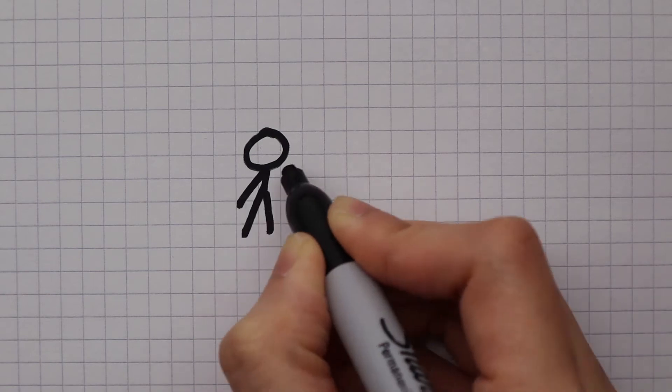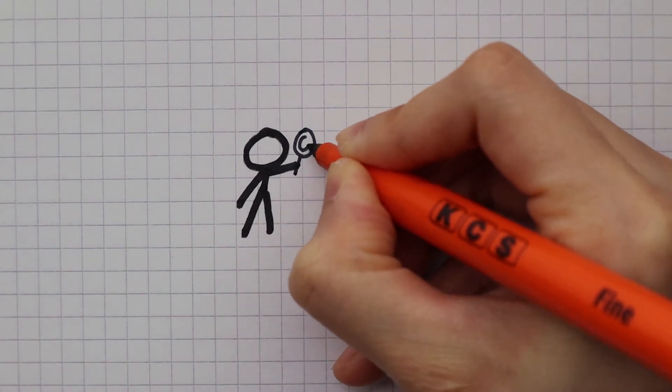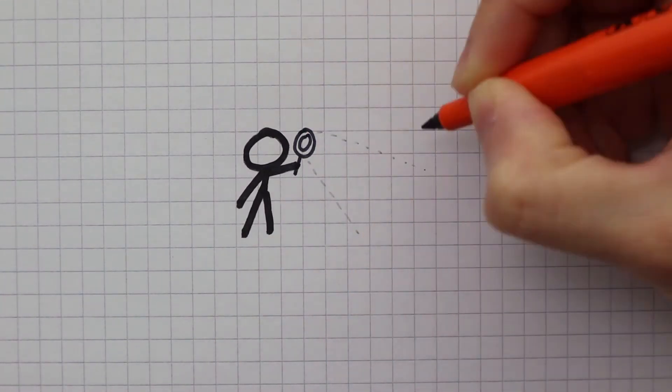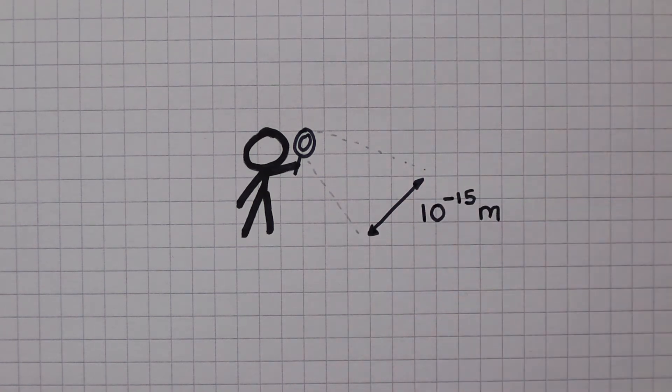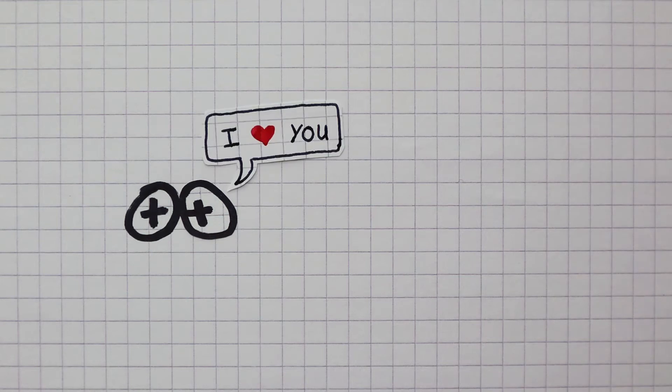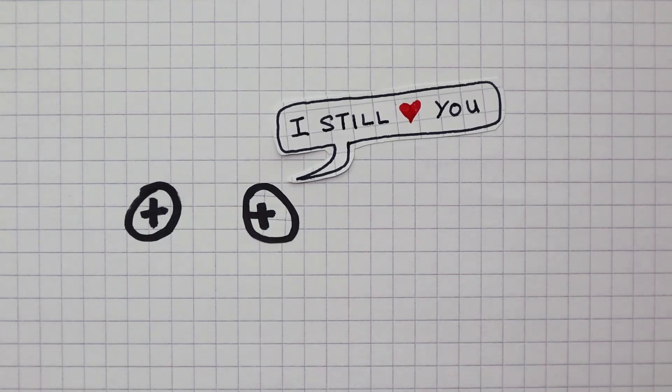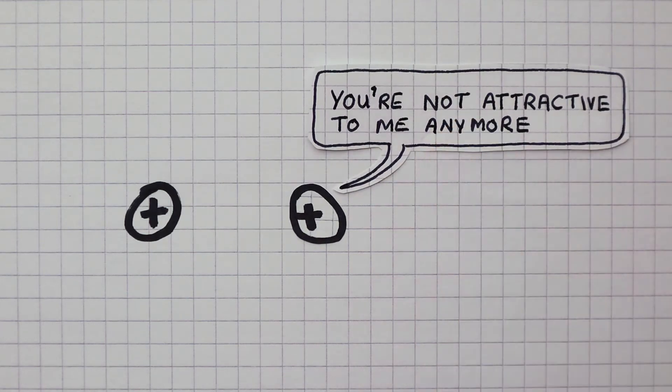The range of the strong force is extremely small compared to the other forces. The order of magnitude of this range is comparable to the diameter of a medium-sized nucleus. So if the proton is taken far enough away from the other protons in the nucleus, it will stop experiencing the strong nuclear force.